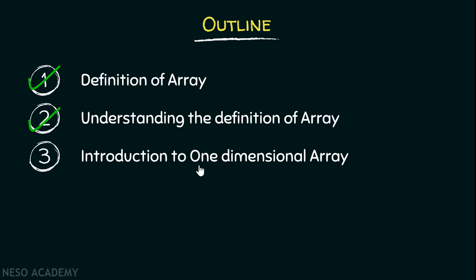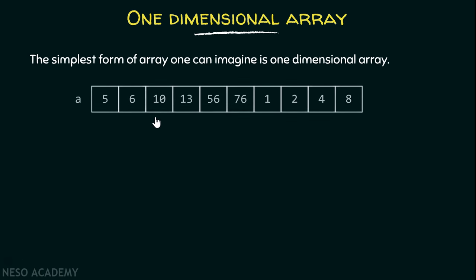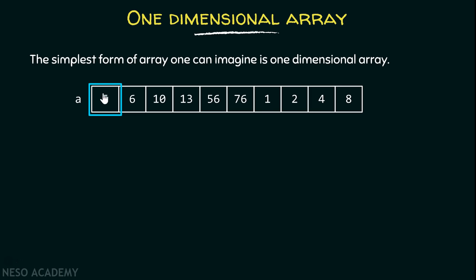Now I will introduce you to one dimensional array. The simplest form of array one can imagine is a one dimensional array. It is a large chunk of memory — a single row — divided into a number of blocks, where each block is capable of storing some data value, and all of them must be of the same type. You can also imagine each block as a variable and the array as a collection of variables. It's up to you how many variables you require and what type of values you will store.